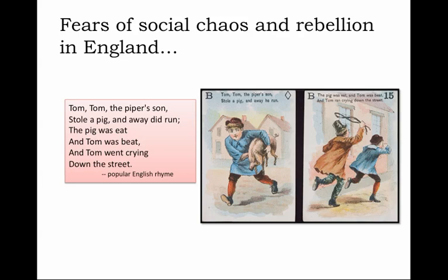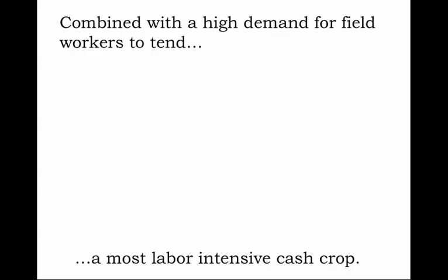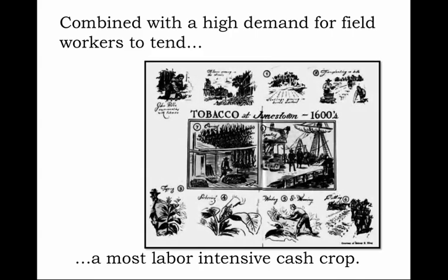Chances are Tom, depicted as a pig thief, after getting his beating probably ended up as an indentured servant going to Virginia. This combined with high demand for field workers who could tend the most labor-intensive cash crop — tobacco, 'the golden weed' as supporters called it, 'the vile weed' as King James called it — drove extraordinary growth. In 1624, already 200,000 pounds annually of Virginia tobacco leaf was being harvested and exported to Europe and England. By 1638, that number had grown exponentially to over 3 million pounds of Virginia tobacco leaf.